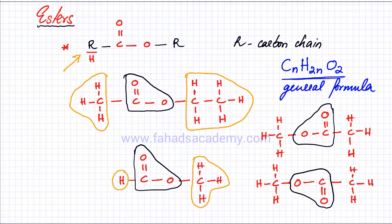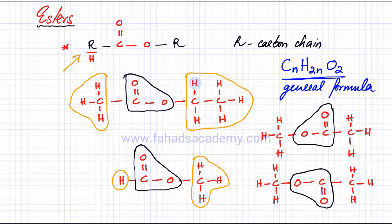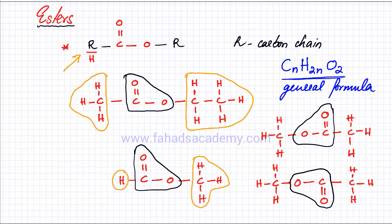If you want to directly know how many atoms a particular ester molecule has, you can use the general formula CnH2nO2. For example, this molecule has four carbon atoms so C is four, H is eight — counting gives one through eight hydrogen atoms — and there are two oxygen atoms. However, it's not very important to know the general formula for an ester if you are doing O levels or IGCSE.